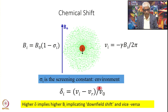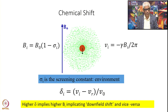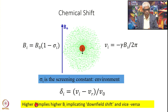Nu_R is a reference compound — you measure absorption frequencies with respect to a particular line of that reference compound. This is a very small number compared to nu_naught, which is your spectrometer frequency corresponding to B_naught. Dividing by nu_naught gives a very small number, so you multiply by 10 to the power 6, giving delta_I expressed in PPM. Higher delta_I means higher B_I, implying a downfield shift and less screening. Higher sigma_I and lower delta_I implies greater shielding and an upfield shift.